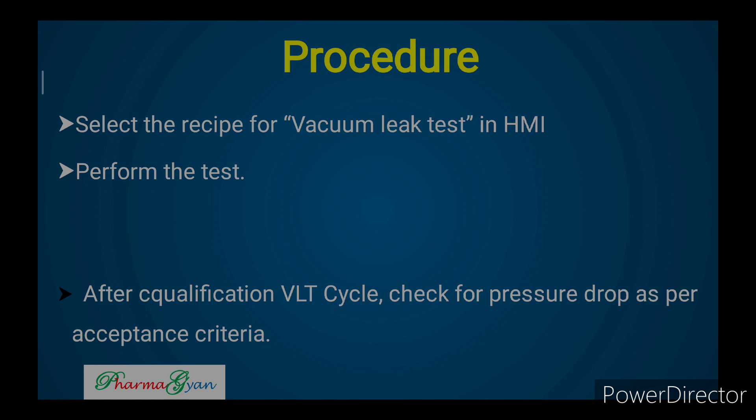The procedure is simple: close the chamber door and from the HMI, select the vacuum leak test recipe that you have developed, then run it. Once you run it, the vacuum leak test will automatically start in the autoclave. When the cycle is complete, verify from the printout how much air leakage was detected.